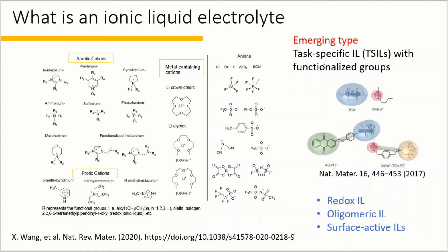For example, replacing the butyl group on the BMIM cation with a tempo group, the cation becomes redox active and can contribute to extra capacitance. Besides the redox and bi-redox ionic liquids, oligomeric ionic liquids and surface active ionic liquids are also new task-specific ionic liquids developed in recent years.